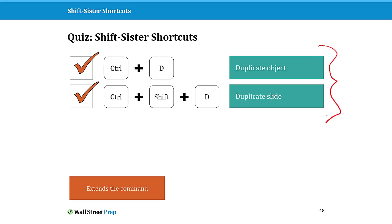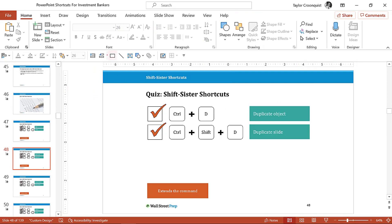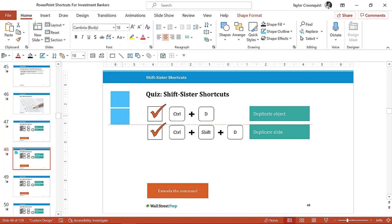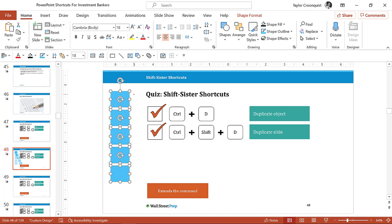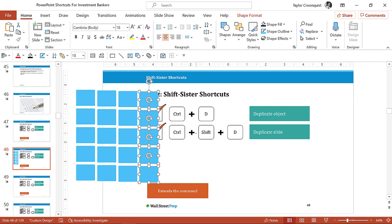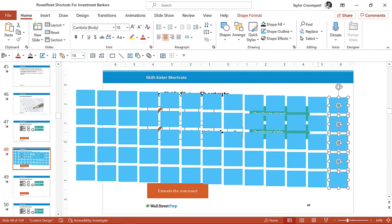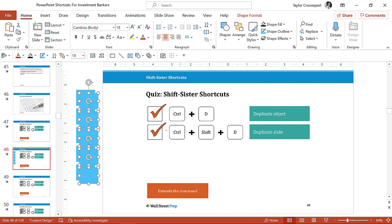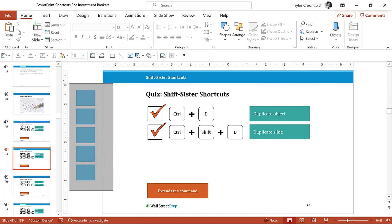I highly recommend memorizing both of these keyboard shortcuts. Let me quickly show you them in action. If I grab a rectangle and hit Ctrl+D to duplicate it — which is twice as fast as copy and paste — the hidden jump feature is this: if I move the object down a bit and hit Ctrl+D again, PowerPoint will move that object the same distance in the same direction that I last moved it. I can align these to the left and then keep hitting Ctrl+D to walk things across my slide.